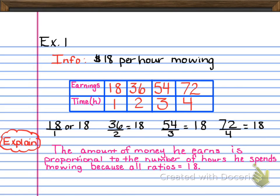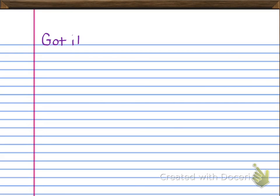The amount of money he earns is proportional to the number of hours he spends mowing because all ratios equal 18. You want to just go ahead and add a little explain bubble off to the left like I've done here. Now you want to go ahead and pause to do the got it problem. So go ahead and pause your video now and you want to do the got it problem as you see it set up. Don't forget to pull out the important information.